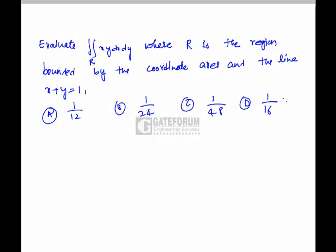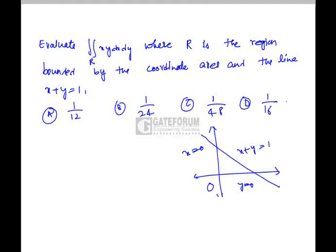Find the area of xy dx where r is the region bounded by the coordinate axes and the line x plus y equals 1. The coordinate axis, this is y equals 0 and x equals 0, and the line x plus y equals 1. Now we have to find this region.